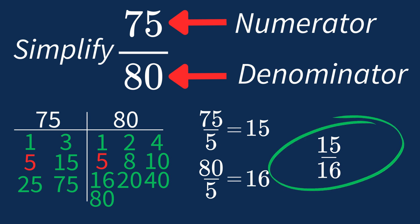And we know 15 over 16 is in its simplest form, because the only common factor between 15 and 16 is 1. And when 1 is the largest common factor, we know that our fraction has been simplified.